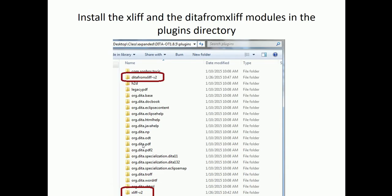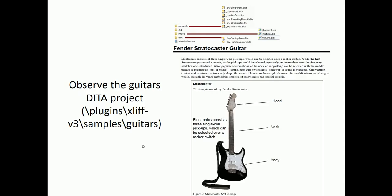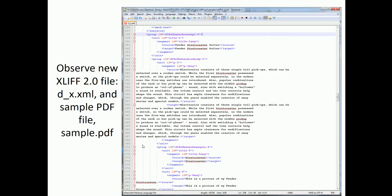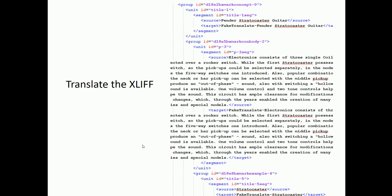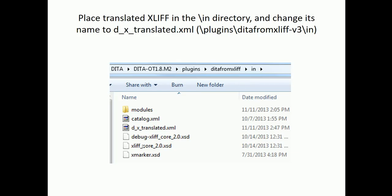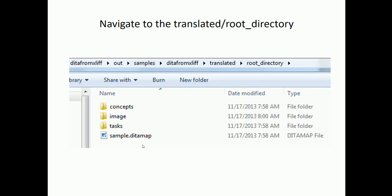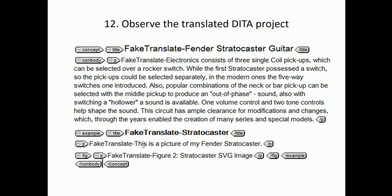To reiterate: we copy the files into the plugins directory. We observe the sample guitars file — it comes with several SVG files, several concepts, a few tasks, and a DITA map. We run the command, observe the XLIF file, translate it, and place the translated XLIF back into the 'in' directory of DITA-from-XLIF version 3. We run the XLIF to DITA command, navigate to the translated root directory, and observe that our files have been pseudo-translated.